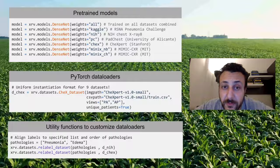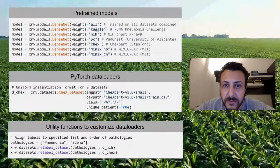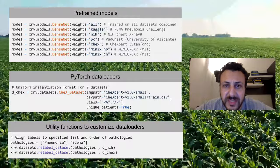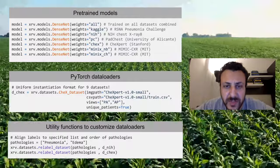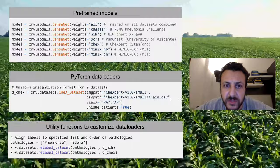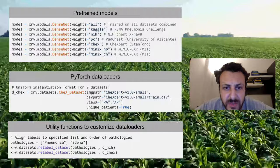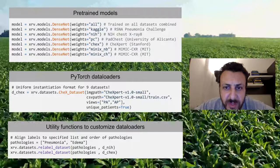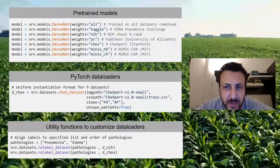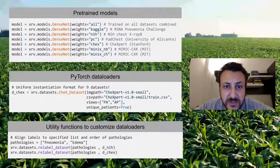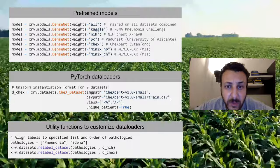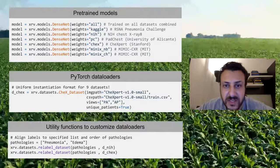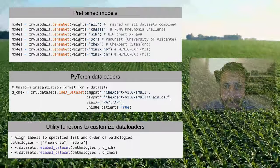Uniform data loaders for 9 different public datasets are available to make it easy to use multiple datasets in your research. Utility functions are provided to help normalize the labels across datasets so you can validate your model on multiple external datasets easily.